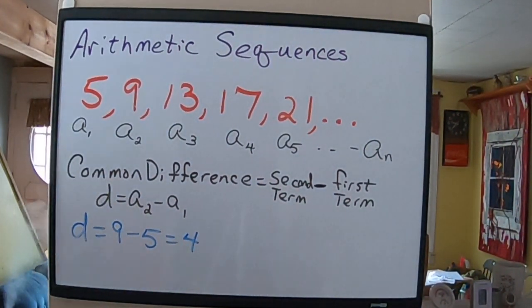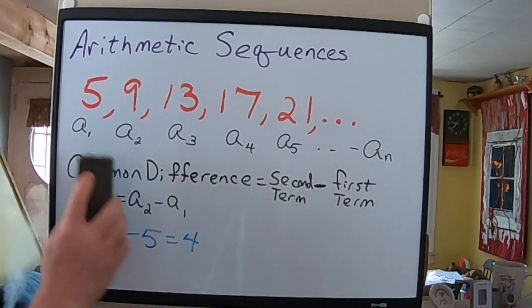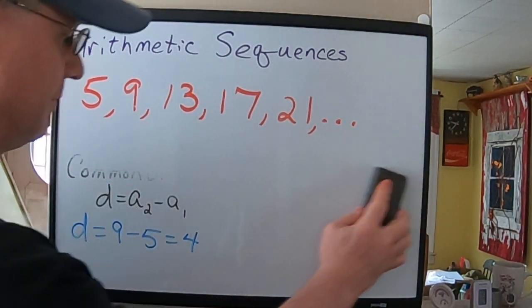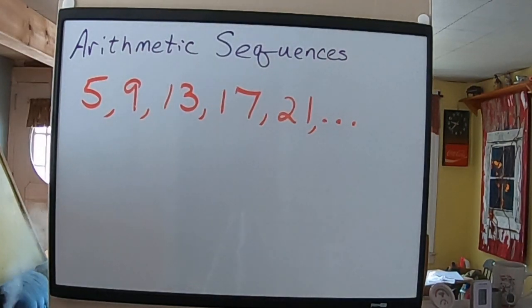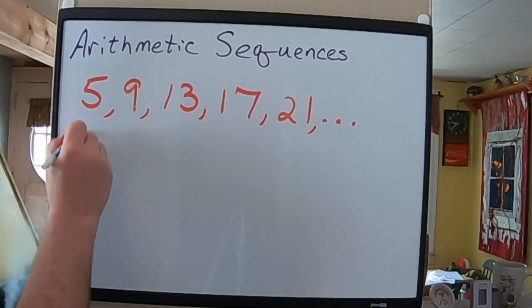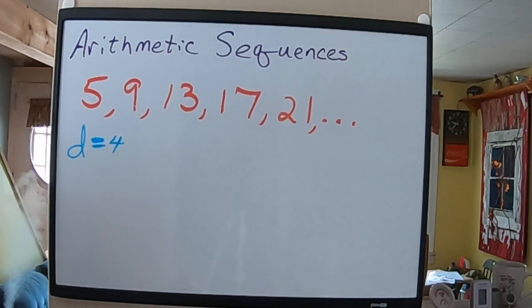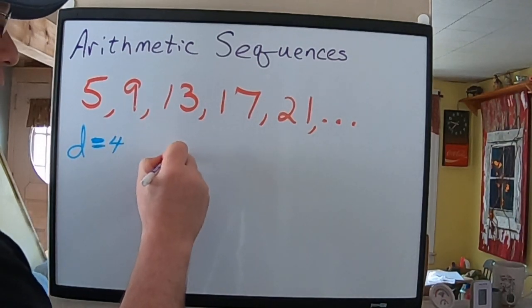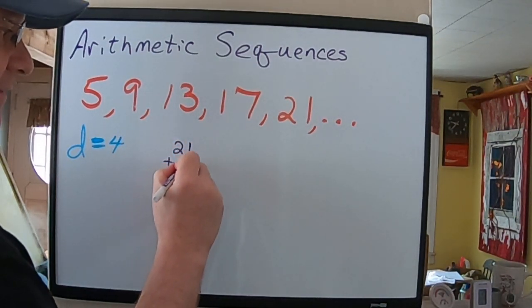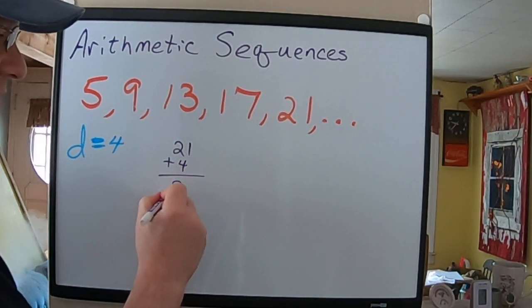We said D was 4. Well, if I need to know the next three terms for this, I can just take the last term, 21, and add 4. That's going to give me 25.